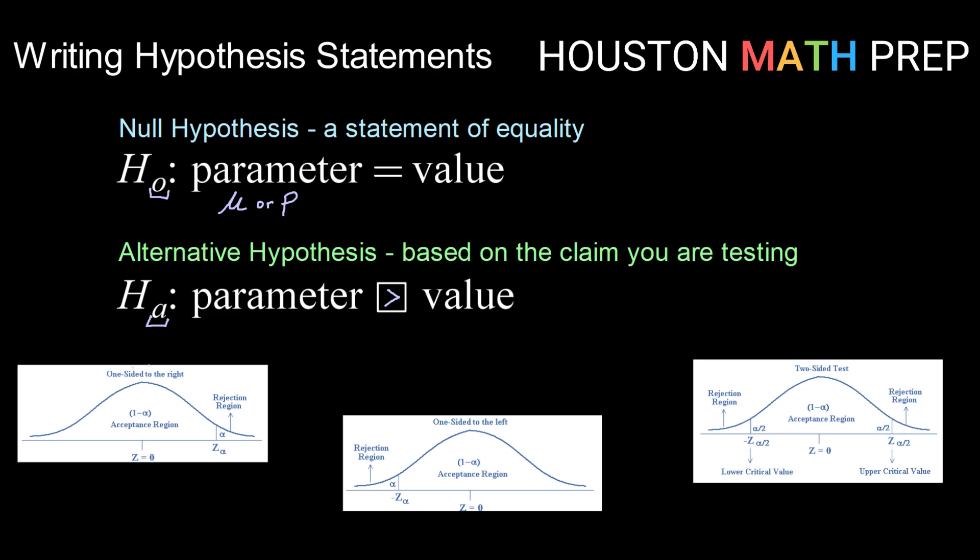And if we were going to draw ourselves a normal distribution, or in the case of an unknown standard deviation, perhaps a student t distribution, we would be looking at being up at the top of the right tail. So our rejection region would be up here when we're talking about the parameter being greater than the value.